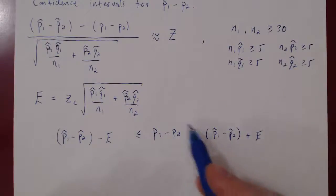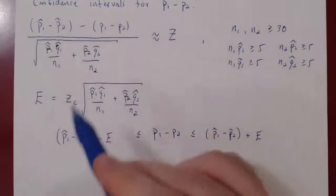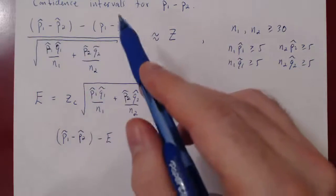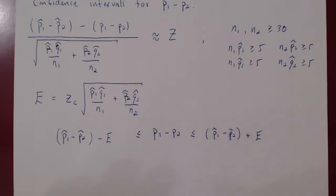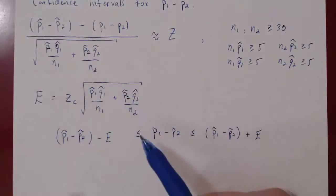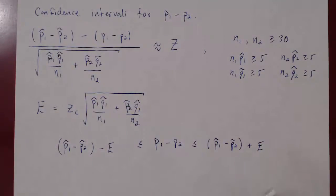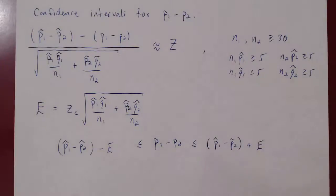That's it. You can derive this by placing the statistic between negative zc and zc, multiplying up by the square root on both sides, subtracting the sample difference of proportions, and negating. You will then have isolated the true difference p1 from population one and p2 from population two, giving you the confidence interval. The question is: will we have the same statistic when we have a test of hypothesis for p1 minus p2, or will the statistic be slightly different? The answer is yes, there will be a slight change.